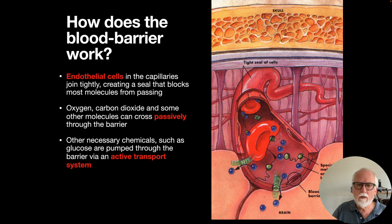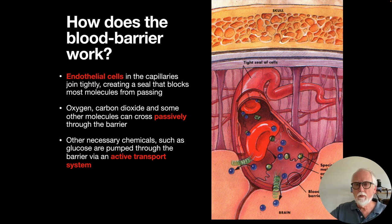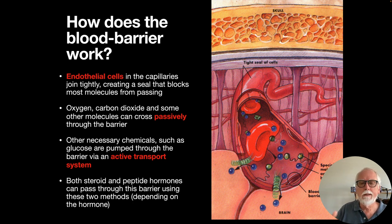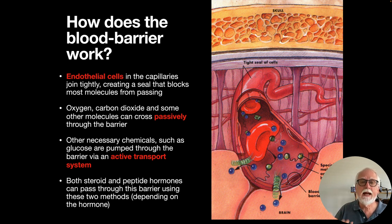Hormones are passed diffusely throughout the entire body in the bloodstream, so cortisol in the blood will reach the brain and must affect it somehow. Both steroid and peptide hormones can pass through the blood-brain barrier using one of these two methods — passive or active transport — depending on the hormone. Nevertheless, both peptide and steroid hormones get through the blood-brain barrier to act on certain neurons.